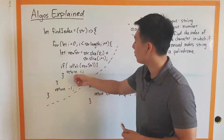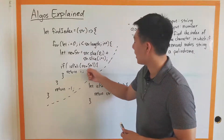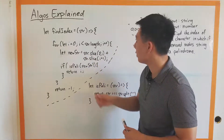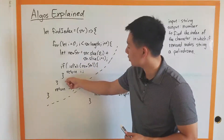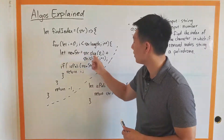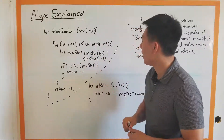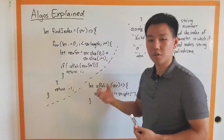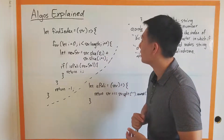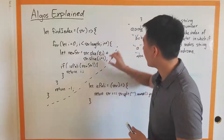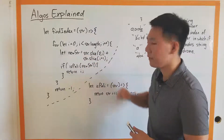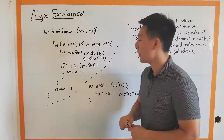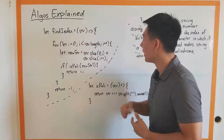If isPally returns true, we return the index. If not, we continue on with the for loop and take out the next character. If you're not too familiar with how to remove a single character from a string using slice, this is exactly how you do it. I highly suggest checking the MDN docs for string.slice.